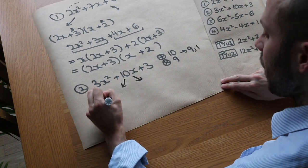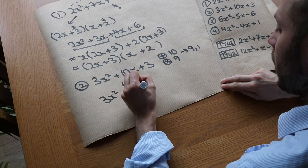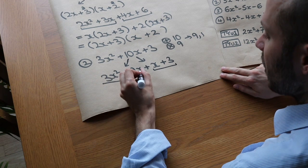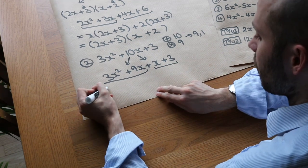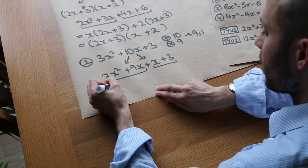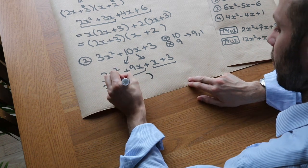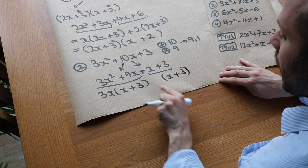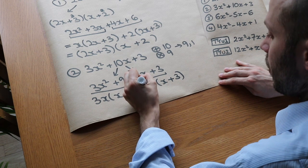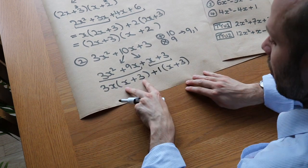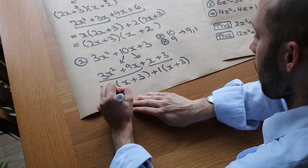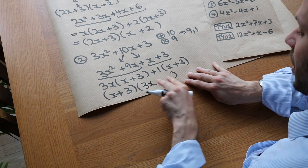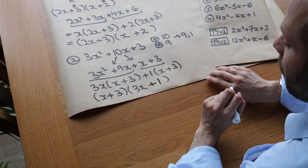We split the middle term: 3X squared plus 9X plus 1X plus 3. Then we factorise each half. What's common to 3X squared and 9X? A common factor of 3 and also X, so we take out 3X. Then 3X times X gives 3X squared, and 3X times 3 gives 9X, giving bracket X plus 3. Duplicate the bracket — what times X plus 3 gives 1X plus 3? Well it's just 1, so we put plus 1. Then X plus 3 is common to both, so we factorise it out: 3X times X plus 3, plus 1 times X plus 3, giving the factorisation 3X plus 1 times X plus 3.